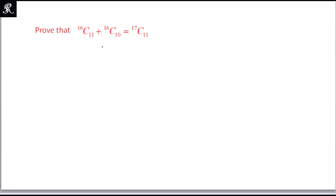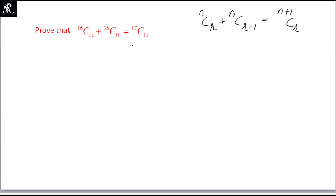Assalamu alaikum. Here we are given another identity and we need to prove that it is the same identity as we discussed in a previous video, where we are given nCr + nCr-1 = n+1Cr. This is the general identity we proved for arbitrary n and r, but now we are given particular numbers for n and r and need to prove it.